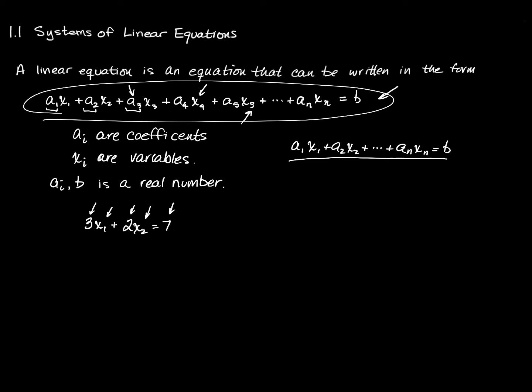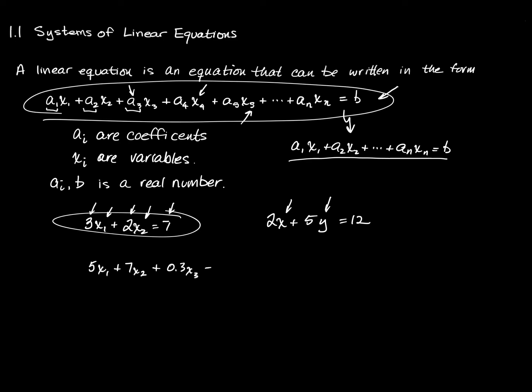You can go on and on, but it gets tedious, which makes it attractive to write it in the compact subscript form. Here's another example: 2x + 5y = 12. In this case I haven't used x sub 1 and x sub 2 — I've used two different letters. That works and is a bit easier to distinguish variables. These are both linear equations in two variables. Here's a linear equation in three variables: 5x₁ + 7x₂ + 0.3x₃ = 19.